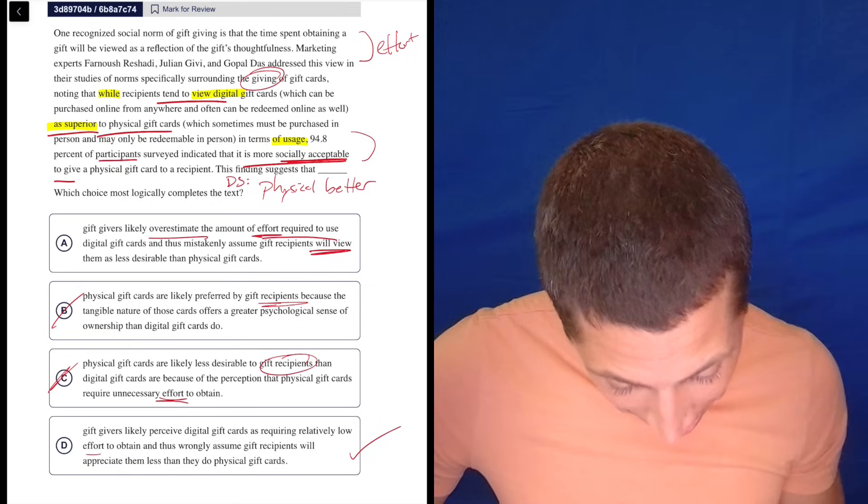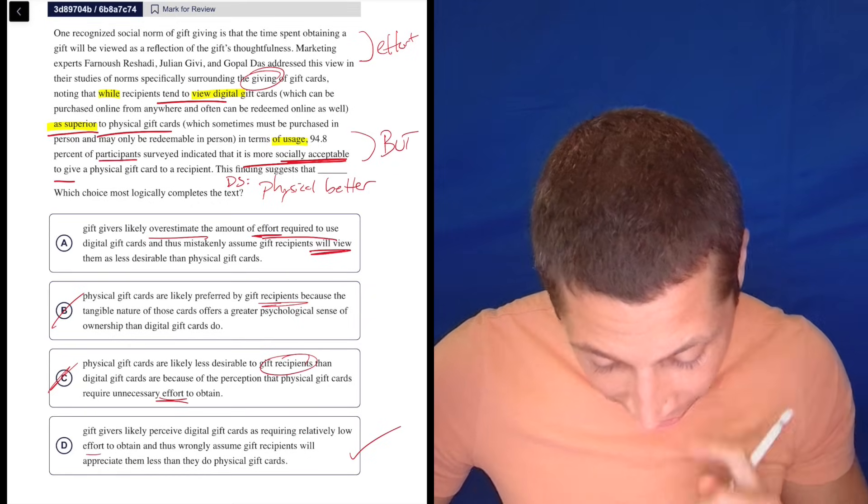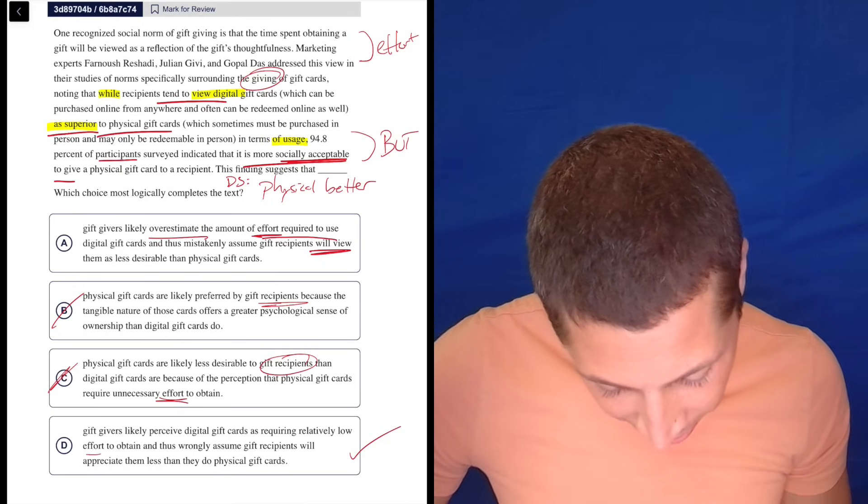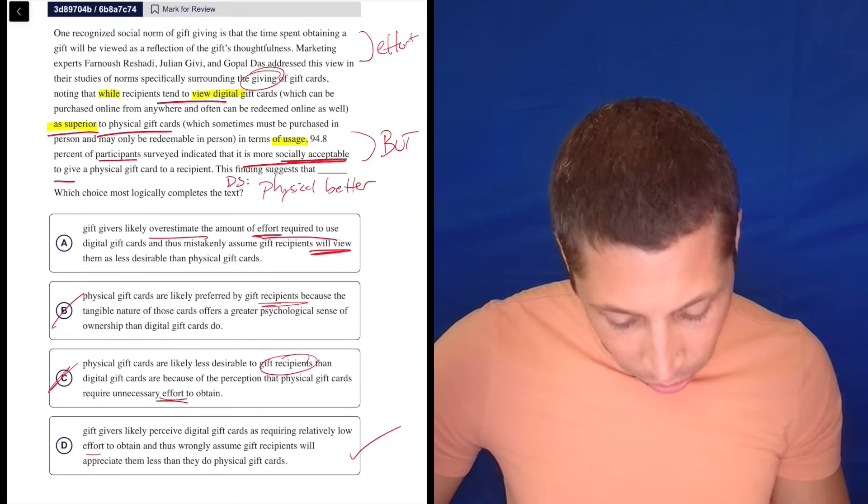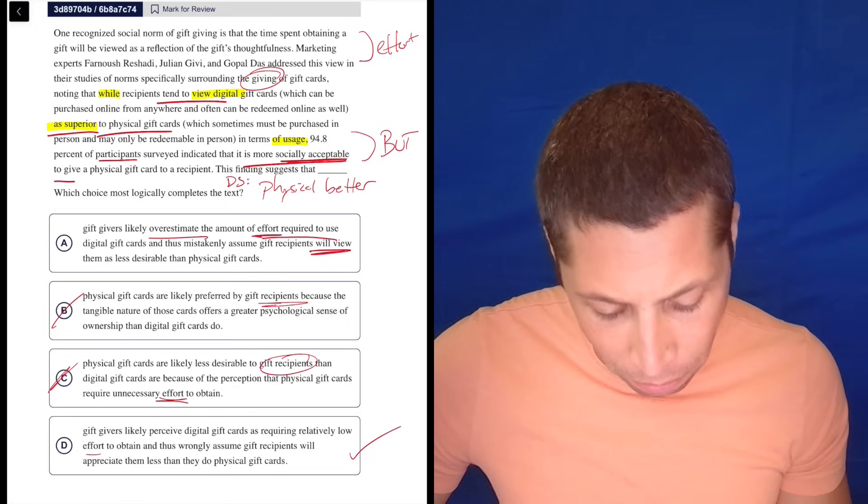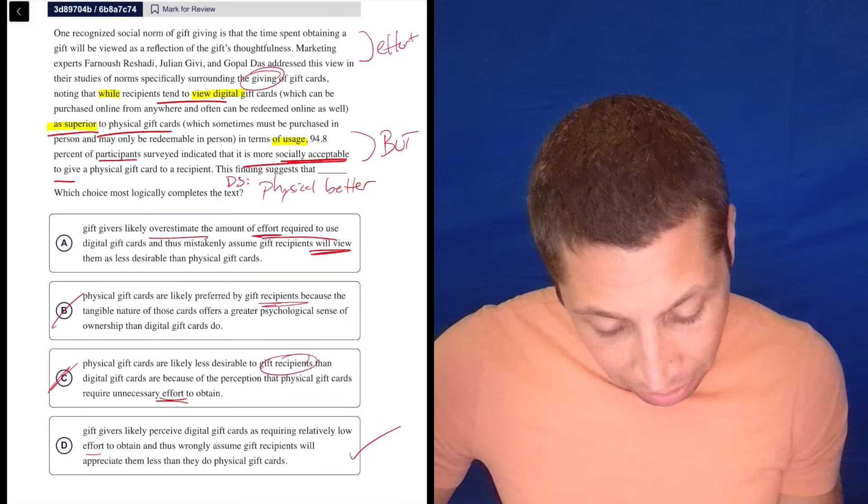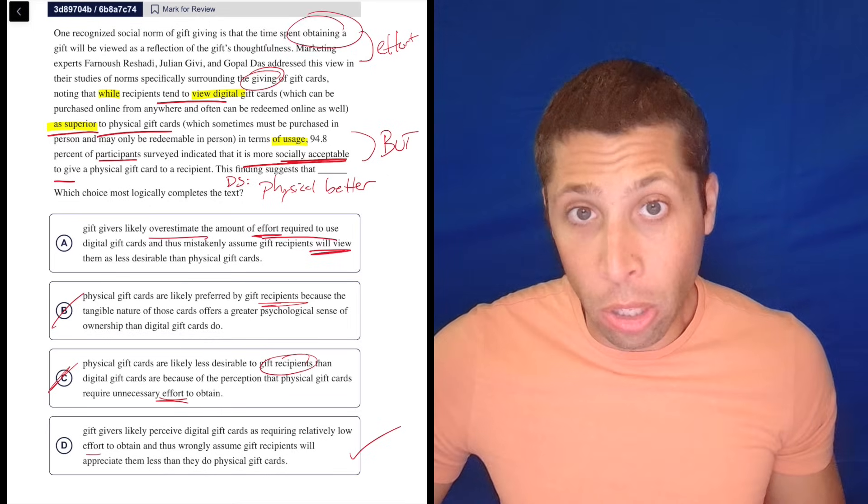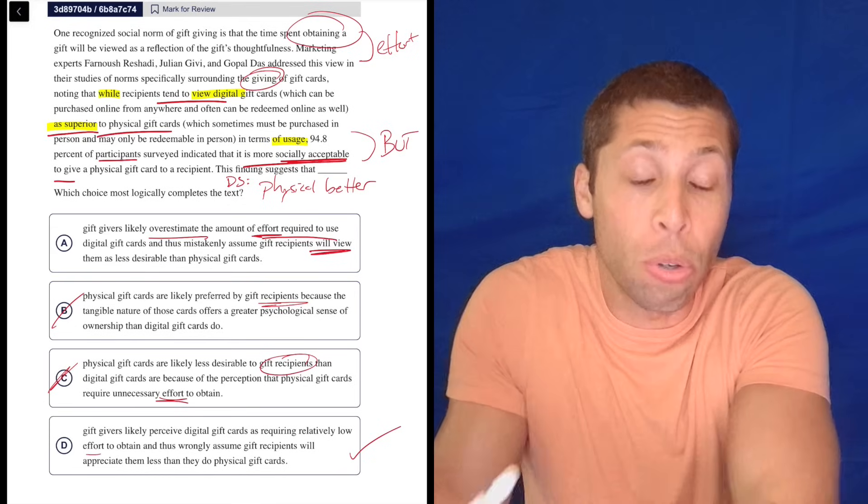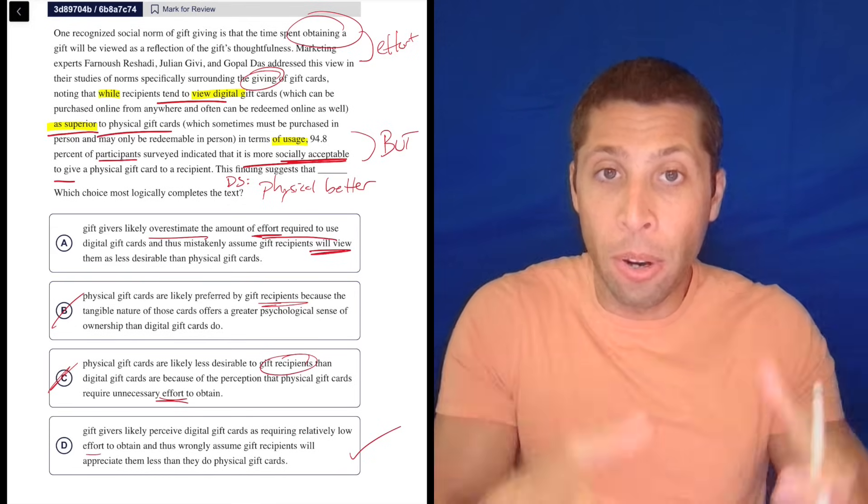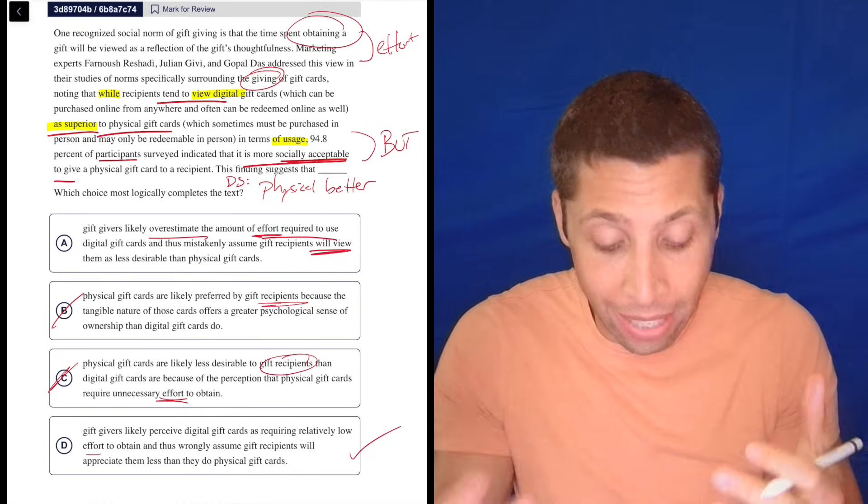But we're talking about the but part here, the but was talking about the giver. So I'm interested in the givers, to physical gift cards. And yeah, so gift givers likely perceive digital gift card, or sorry, I'm going back to A. Gift givers likely overestimate the amount of effort required to use. It's not about the usage of it, right? So it's about the obtaining it. So I don't think it has anything to do with the usage, right? I'm not thinking about the effort that the person I'm giving the gift card to will have to expend in order to use it. They're talking specifically about the effort required to obtain the gift card. That's at least the first sentence. So that's going to be closer to D.